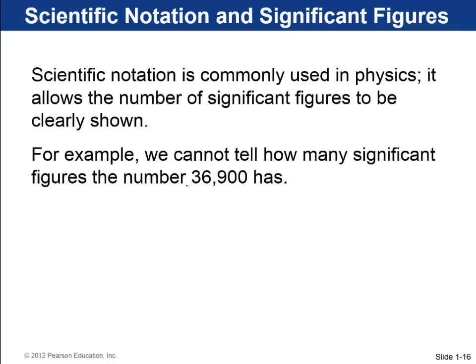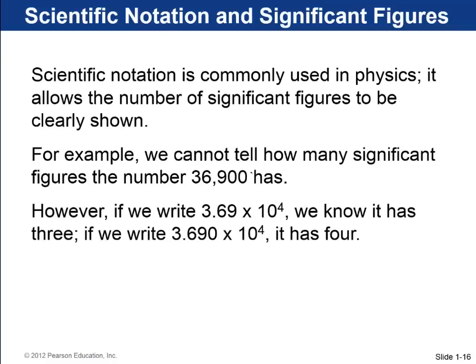Scientific notation is commonly used in physics because it allows the number of significant figures to always be clearly shown. For example, 36,900, we have that ambiguity: are these two final zeros significant or not. If we write 3.69 times 10 to the 4, that's scientific notation, in which you always put one digit and then a point, and then times it by some power. That, we know, has three significant figures. And if we wanted to write it as four significant figures, we would write 3.690 times 10 to the 4. This zero is definitely significant because it's not a placeholder.